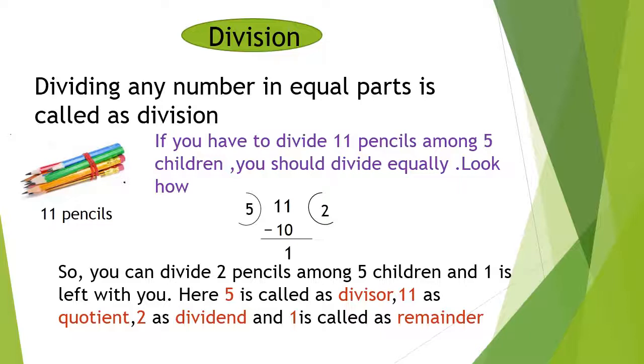Here, 5 is the divisor, 11 is the dividend, 2 is the quotient, and 1 is the remainder. Children, let's look at some more properties of division.